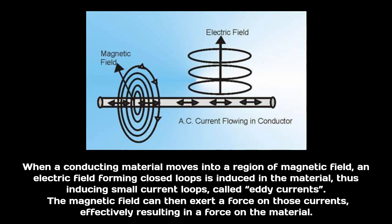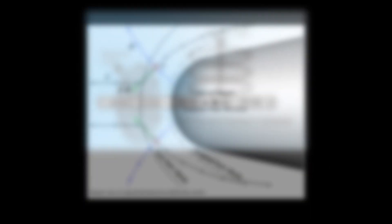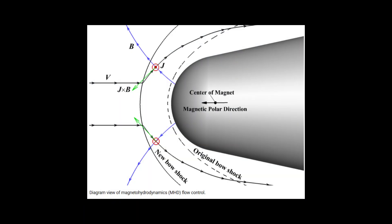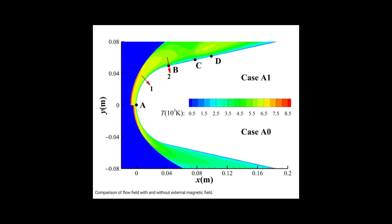Hypersonic ionized flow interacts with the magnetic field, inducing eddy currents in the plasma. The current combines with the magnetic field to give Lorentz forces that oppose the flow and detach the bow shock wave further ahead of the vehicle, lowering the heat flux which is due to the brutal recompression of air behind the stagnation point.